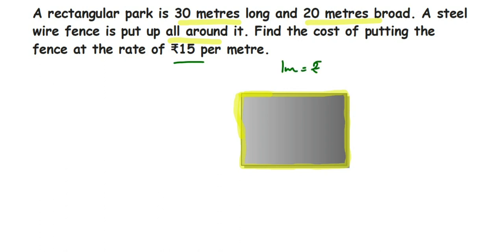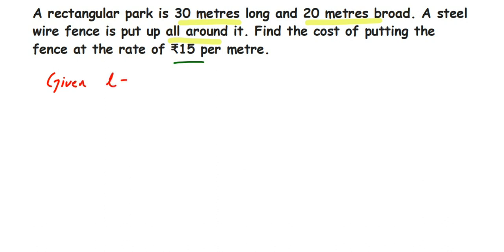are taking 15 rupees. This is given. Now let's find the perimeter first, and later we'll find the total cost. So let's write down what is given: length equals 30 meters and breadth equals 20 meters. First, we're going to find